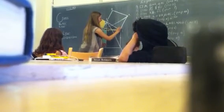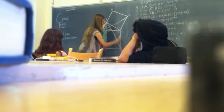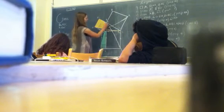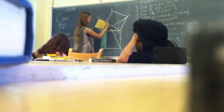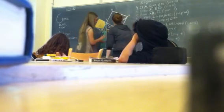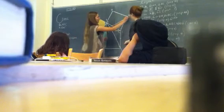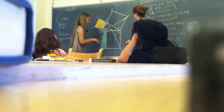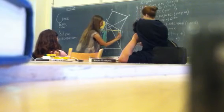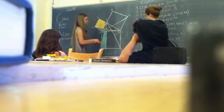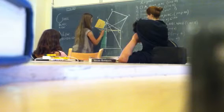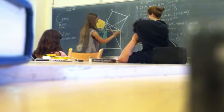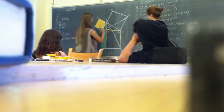Here we have these angles which are equal, just like the green and orange were. And then we have this side which is equal to this side, and then this side which is equal to this side. So therefore, the triangles as a whole are equal.